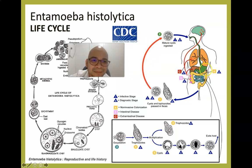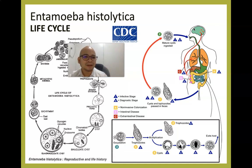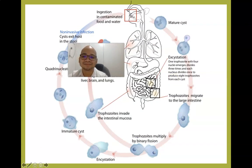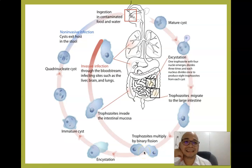Once we ingest the cyst, it survives gastric juices due to its thick, highly resistant cyst wall. It can cause extra-intestinal infection — for example, brain amoeba — but the most common organ infected is the liver. From the cyst, it becomes a trophozoite through the process called excystation. The mature cyst becomes a trophozoite by excystation. The trophozoite then divides by binary fission — it is the multiplying stage.